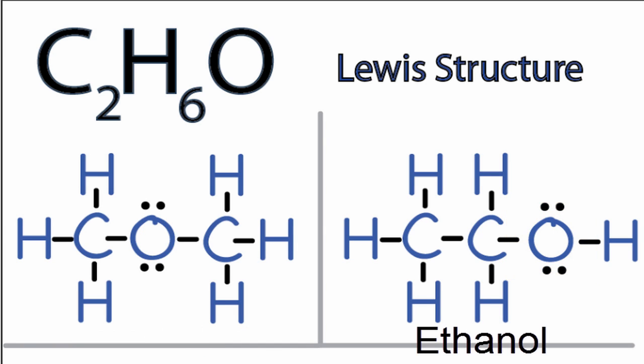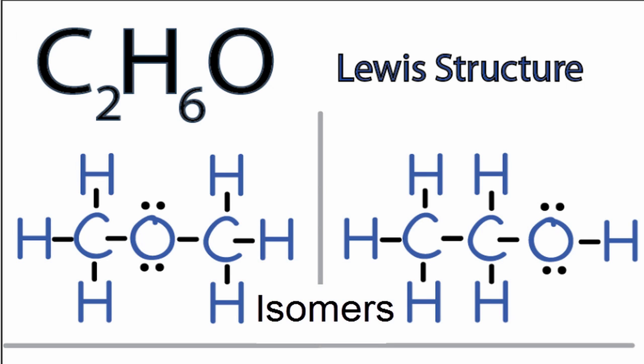So they're both valid Lewis structures. They use the number of electrons that are available for C2H6O and they also satisfy the outer shells — they fill the outer shells for each of the atoms in the C2H6O Lewis structure. They're called isomers because of this. They have the same chemical formula, the same number of valence electrons, but their structures are drawn differently and they're very different compounds with very different chemical and physical properties.